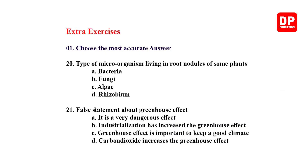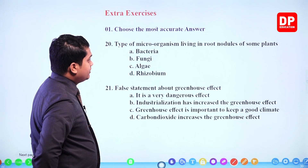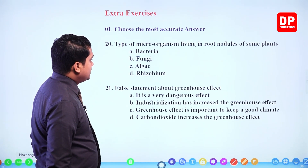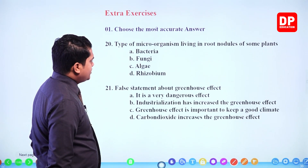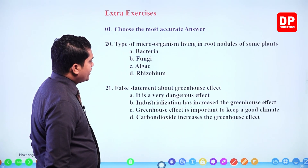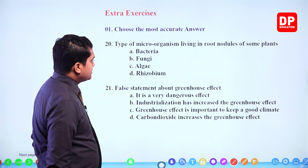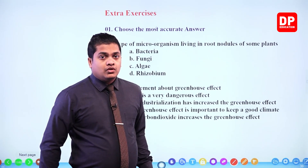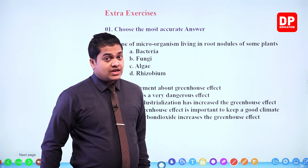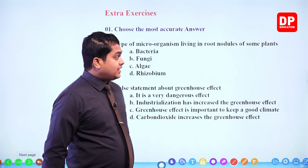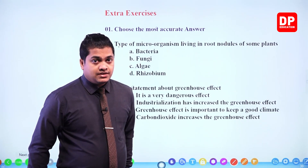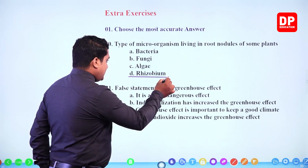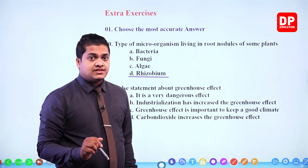Question 20: type of microorganism living in root nodules of some plants — bacteria, fungi, algae, or Rhizobium. Both bacteria and Rhizobium are correct, since Rhizobium is a type of bacteria. However, you have to choose the most accurate answer. The type of bacteria specifically living within the root nodules of some plants is Rhizobium. So go for the answer Rhizobium.